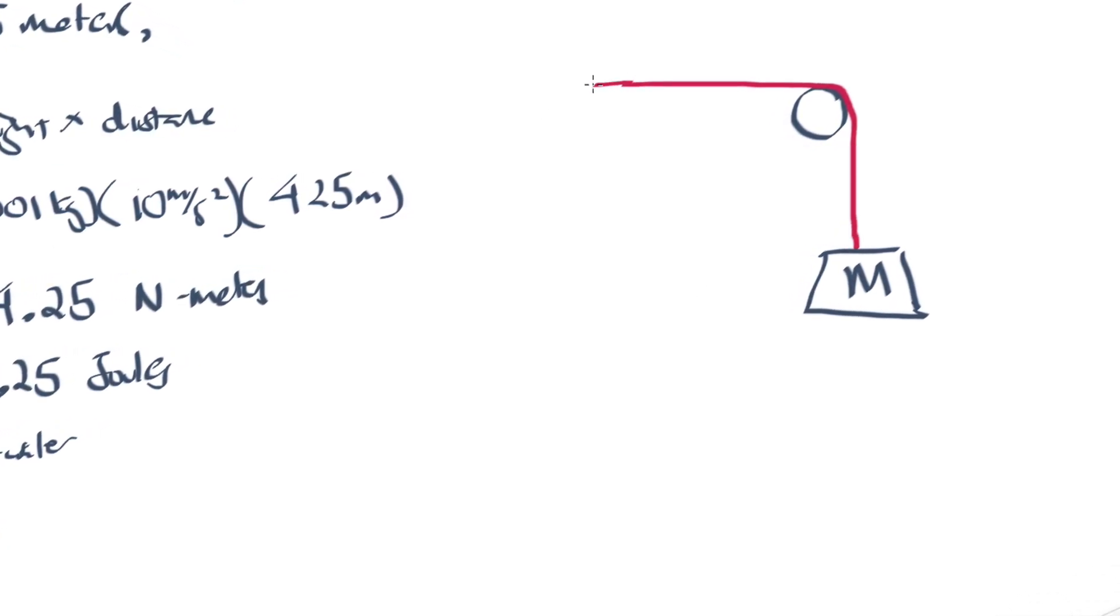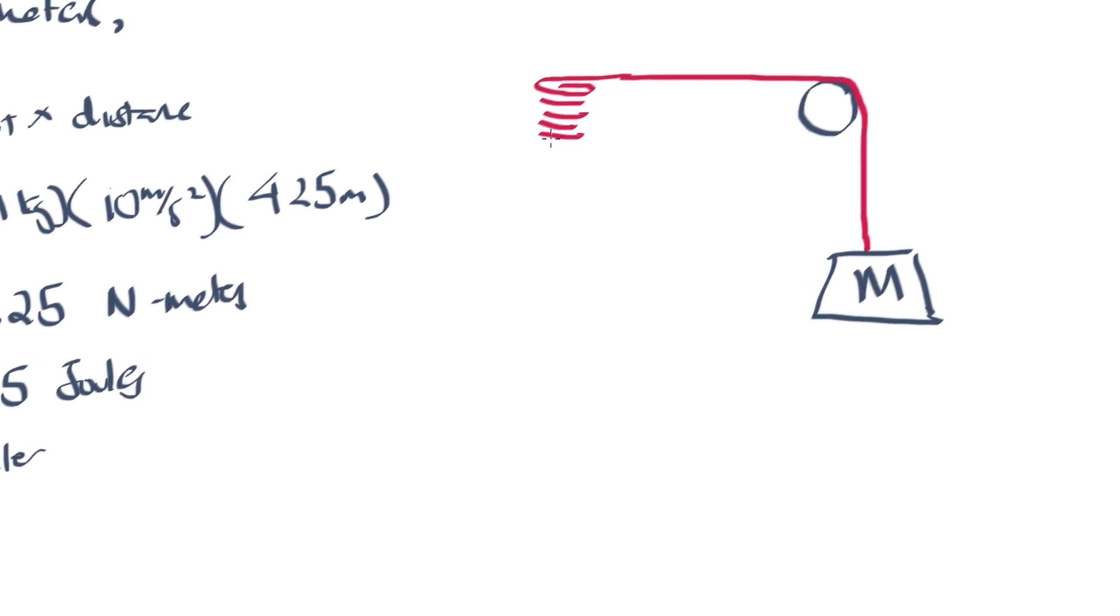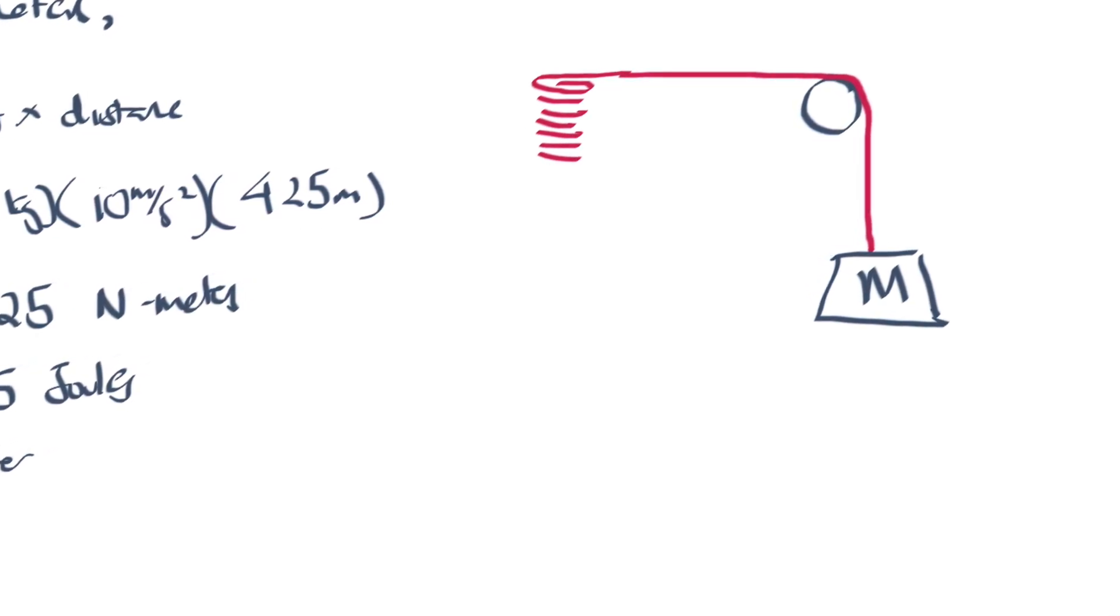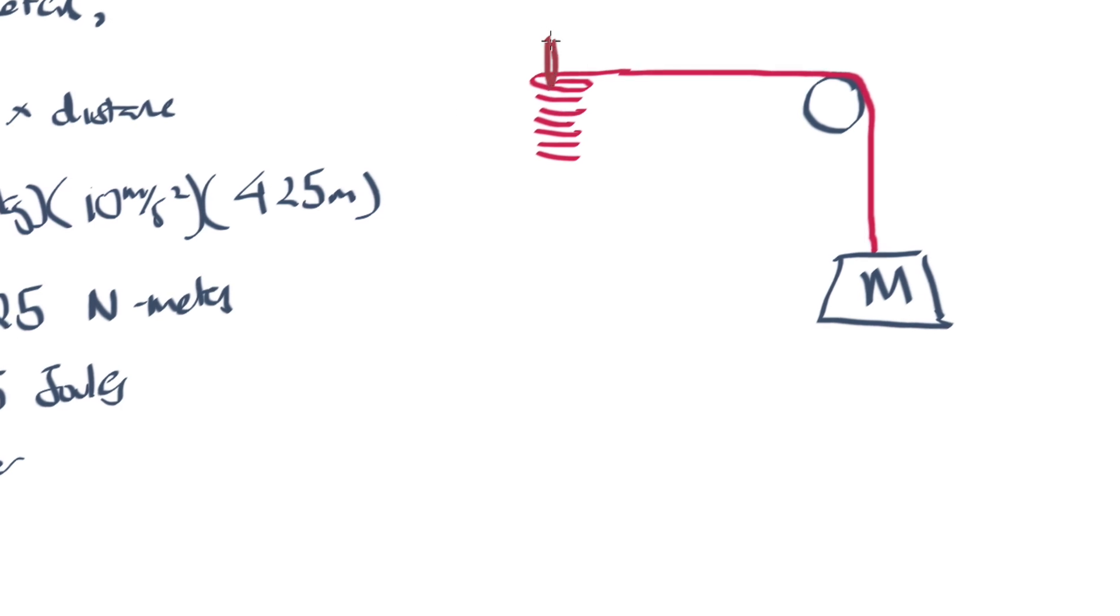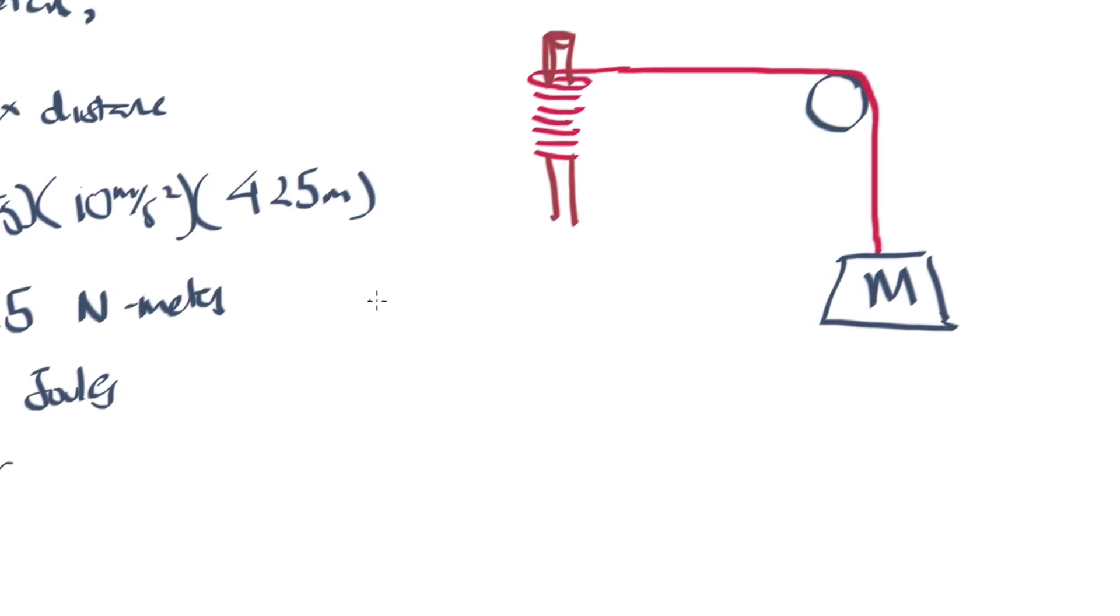and then this rope, he wrapped around, there's several ways that he did his experiments, I'm kind of explaining one of the ways he did the experiment. He wrapped this rope around a shaft, so I'll draw the shaft right here,